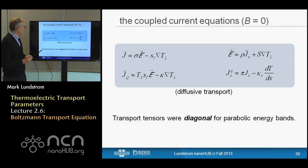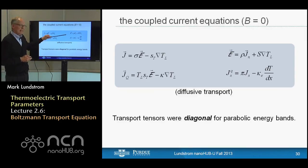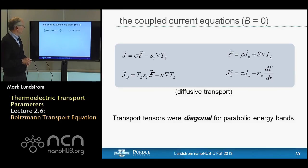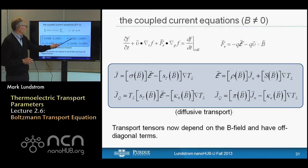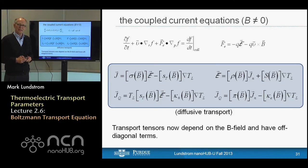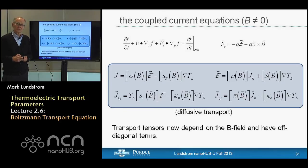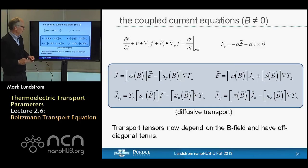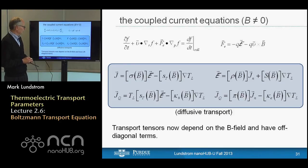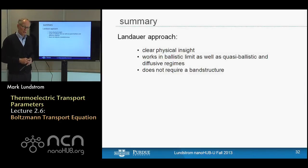Without a B field, the transport coefficients for isotropic materials are just scalar coefficients, not tensors. When we apply a B field, even to an isotropic material, all transport coefficients become functions of the magnetic field. People learned a great deal about semiconductor band structures in the 1960s by doing careful measurements of thermoelectric transport coefficients as a function of magnetic fields in various directions — deducing, for example, that germanium has ellipsoids oriented along 111 directions. Hall effect measurements remain widely used today to characterize materials.